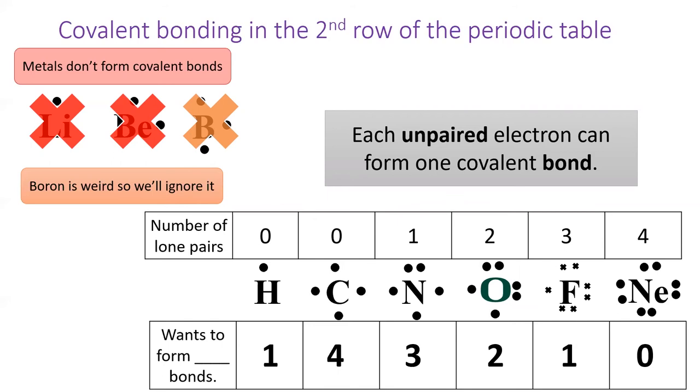Carbon can form four bonds, which makes it incredibly versatile and the most important element in the fields of organic chemistry and biochemistry. Neon can form no covalent bonds, which matches the pattern of non-reactivity we've come to expect from the noble gases.